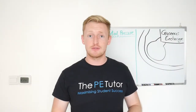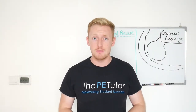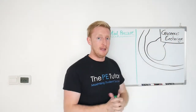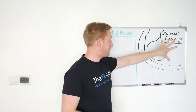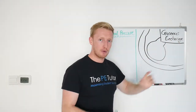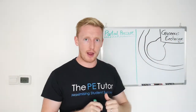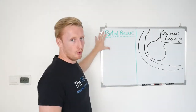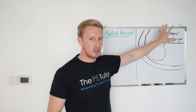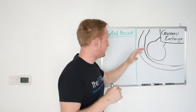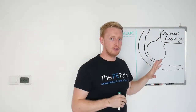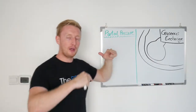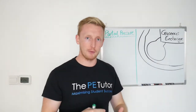Hello and welcome to this lesson from the GCSE PE portal. Today we're going to be looking at gaseous exchange. Before we look specifically at the alveoli and the capillary and how gases move around and allow us to live, we first need to cover a very important term, which is partial pressure, because to fully understand how gases are able to exchange, we need to understand the chemistry behind what makes them move around.